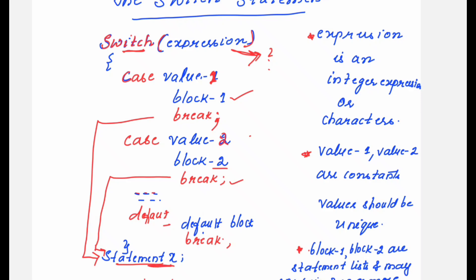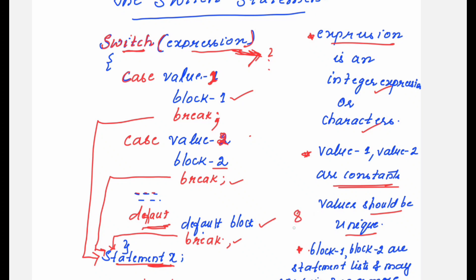If any of the values does not match — say you have 10 cases and not even one value matches the expression — then it will execute the default block. The statements written under the default case get executed, then a break brings control out to statement x. Remember: the expression in the switch can be an integer expression or characters. The values mentioned against each case are constants only and must be unique — you cannot repeat a value.